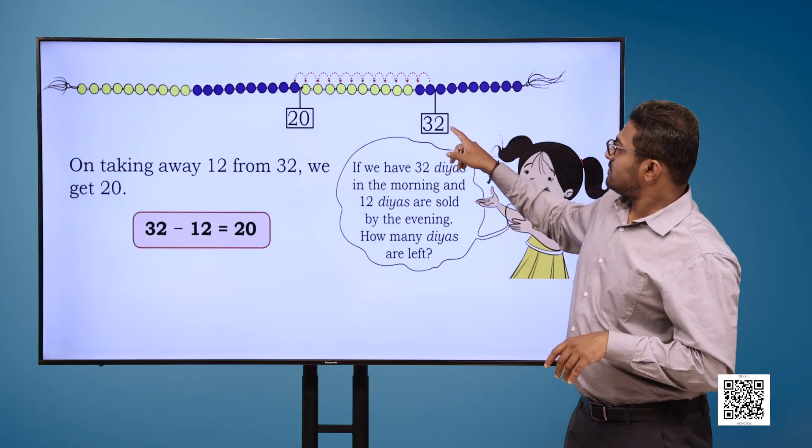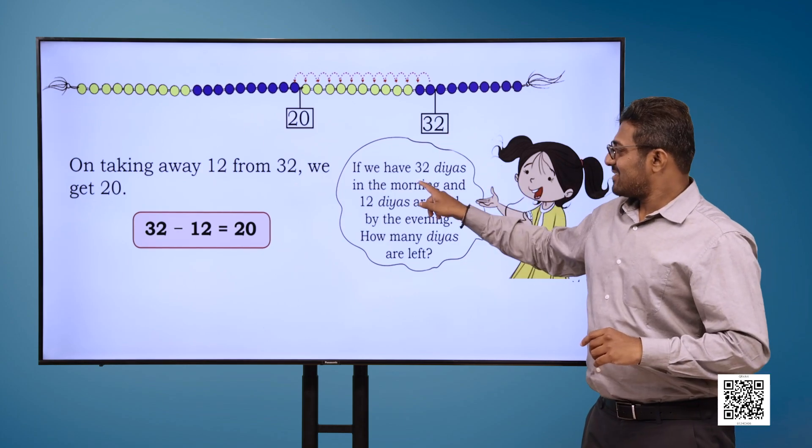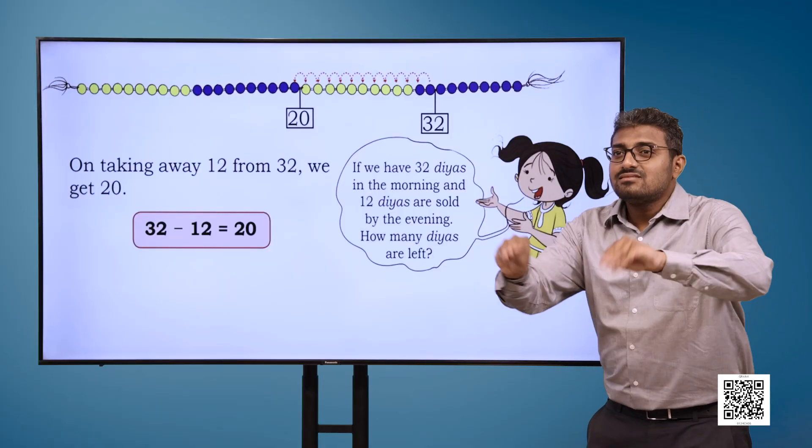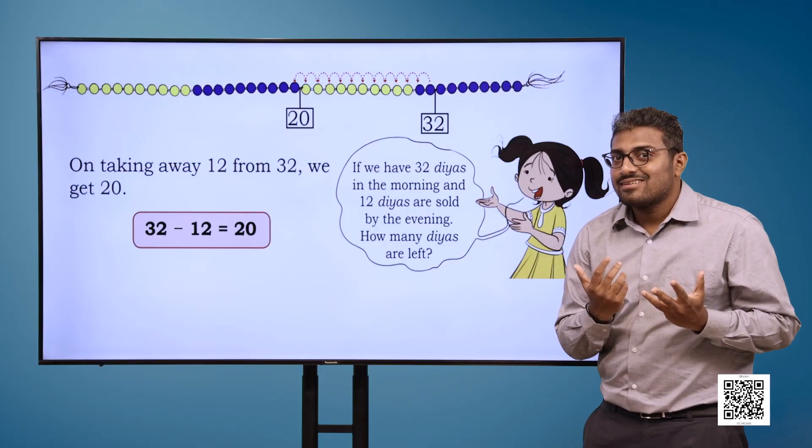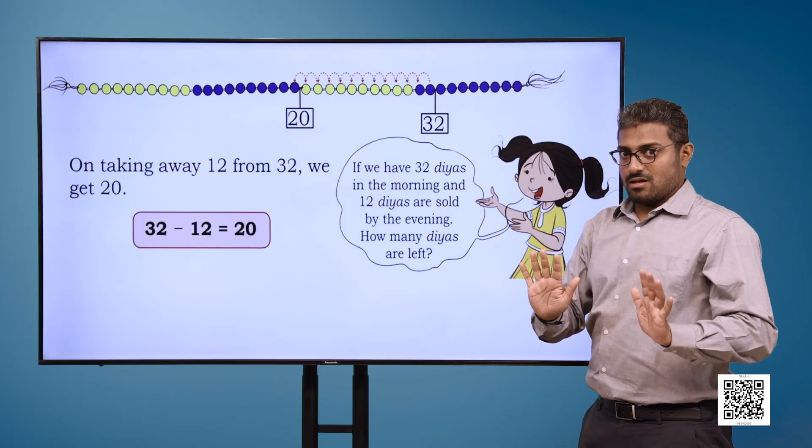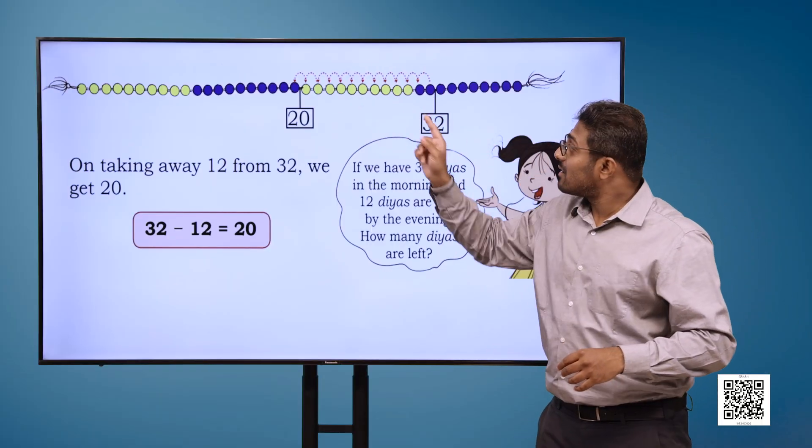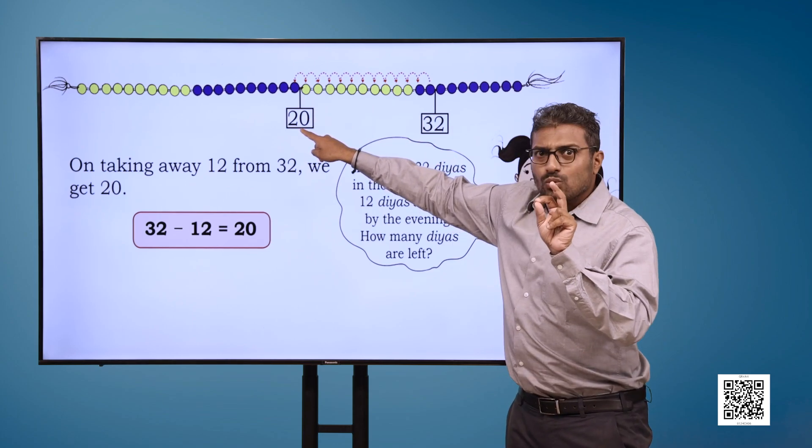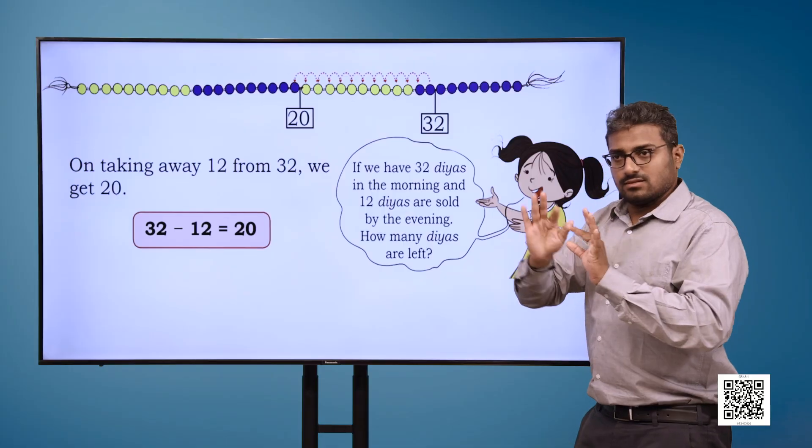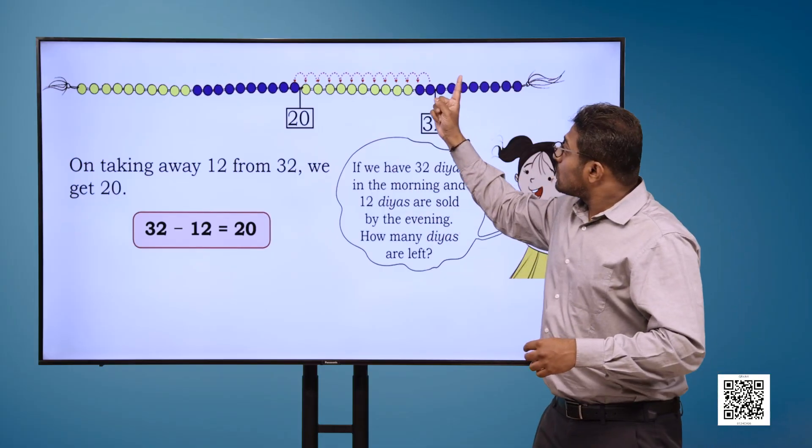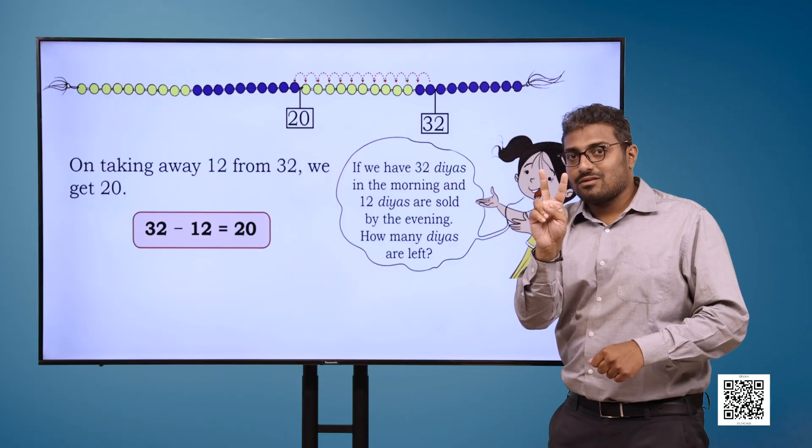Now we have the Ginlari again. The girl says, If we have 32 diyas in the morning and 12 diyas are sold by the evening, how many diyas are left? On taking away 12 from 32, we get 20. 32 minus 12 is equal to 20.